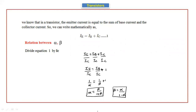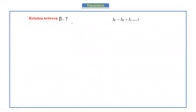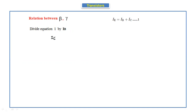Now let's see the relation between beta and gamma. We use the same equation IE equals IB plus IC. For this, we have to divide equation number one by IB.